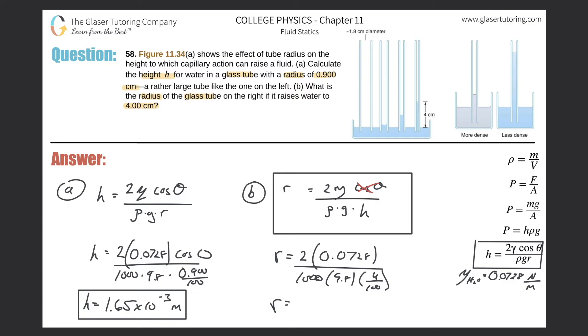And let's see what we got. So here's the radius now. So it's going to be 2 times 0.0728. And then take that all and now divide it by 1,000 times 9.8 times 4 divided by 100. And we should get a value here of 3.71, 3.71 times 10 raised to the minus 4. And that is in terms of meters.